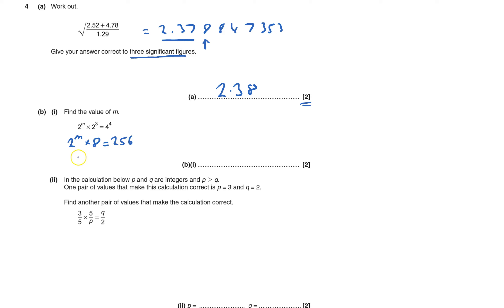Divide both sides by 8. That'll give me 2 to the power of m equals 32. So I've got a calculator. And 2 times, how many times do I need times 2 together to get 32? And the answer is 5. 2 times 2 is 4 times 2 is 8 times 2 is 16 times 2 is 32.